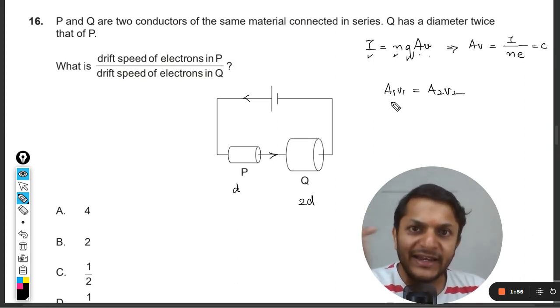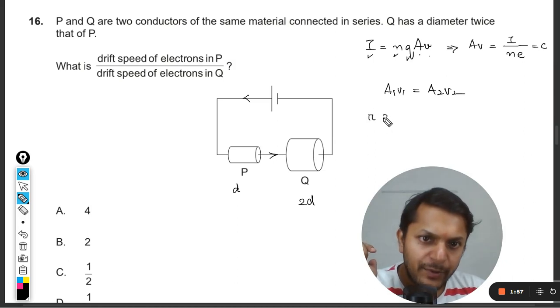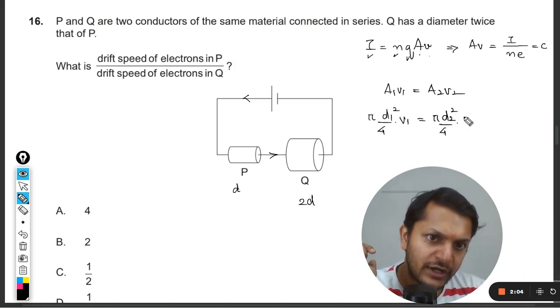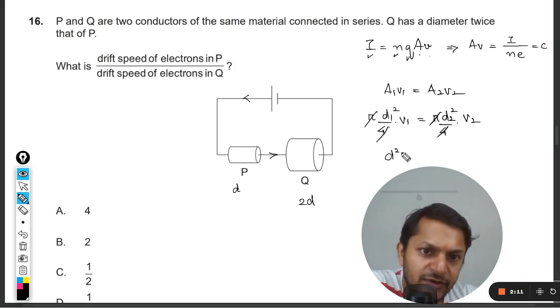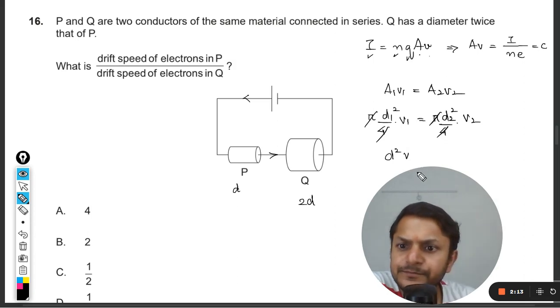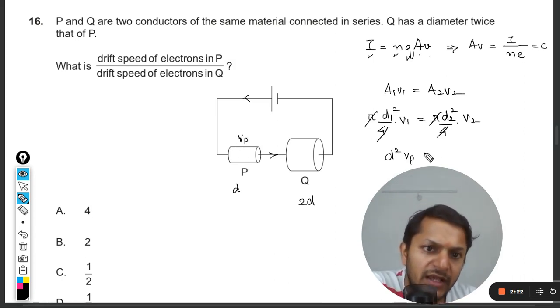So A₁V₁ is equal to A₂V₂. Now what is area? Pi d square by 4. So pi d₁ square by 4 into v₁, this is pi d₂ square by 4 into v₂. Pi by 4, pi by 4 gets cancelled out. So the diameter for P can be taken as d, so it will be d square into v—okay, let me call this as P—then v₁, so I'm calling it Vp.